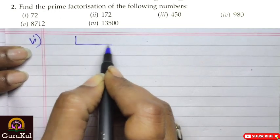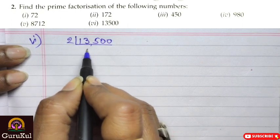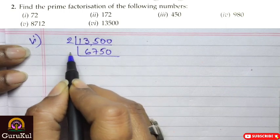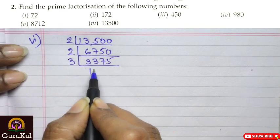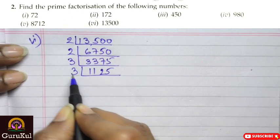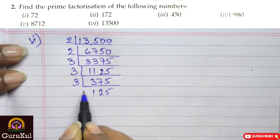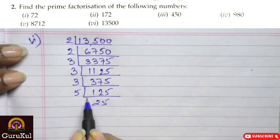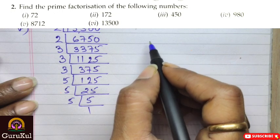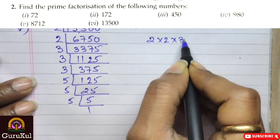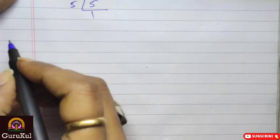Question number 6: the figure is 13,500. Starting with 2: 13500 ÷ 2 = 6750, ÷ 2 = 3375. Then ÷ 3 = 1125, ÷ 3 = 375, ÷ 3 = 125. Then 125 ÷ 5 = 25, ÷ 5 = 5, ÷ 5 = 1. Hence the prime factorization of 13,500 is 2 × 2 × 3 × 3 × 3 × 5 × 5 × 5.